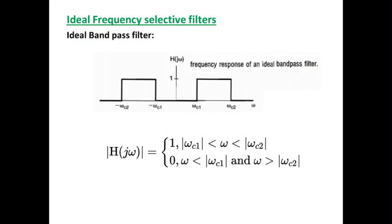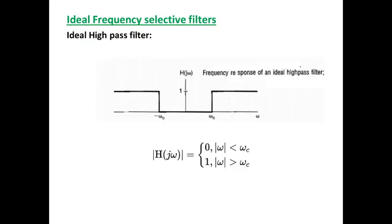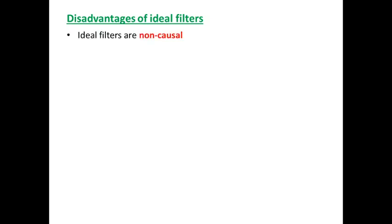The important characteristic of ideal frequency selective filters is that the transition region from pass band to stop band is very sharp, and that is why it is called as an ideal frequency selective filter. However, we know that practically it is not possible to obtain a very sharp transition from pass band to stop band. We will discuss the disadvantages of ideal filters — why we cannot realize ideal filters — and then move on to practical frequency selective filters. The first point is that ideal filters are non-causal. Please recollect what non-causality means from your signals and systems studies.